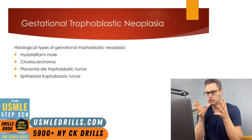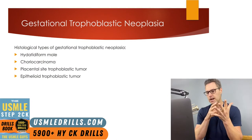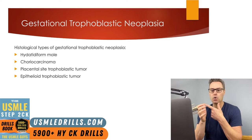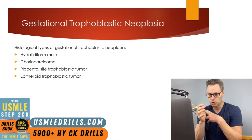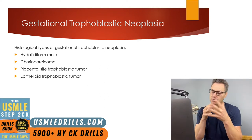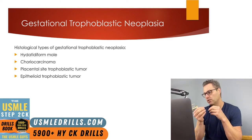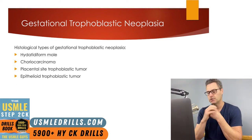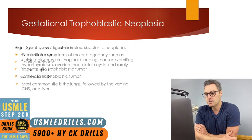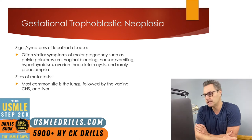Let's move on to gestational trophoblastic neoplasia. This can follow a hydatidiform mole, but it could also follow choriocarcinoma, epithelioid trophoblastic tumor, or placental site trophoblastic tumors. Both hydatidiform moles and choriocarcinoma histology will be found with elevated HCG, but placental site trophoblastic tumors and epithelioid trophoblastic tumors will have low levels of HCG — an easy way to differentiate between the two. Signs and symptoms are very similar to those of a molar pregnancy.